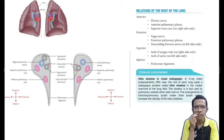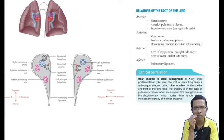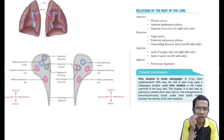The relations of the root of the lung are as follows. Anterior to the root of the lung lies the phrenic nerve, anterior pulmonary plexus, and superior vena cava on the right side. Posterior to the root lies the vagus nerve, posterior pulmonary plexus, and descending thoracic aorta on the left side. Superior to it is the arch of the azygous vein and arch of aorta, and inferior to the root of the lung is the pulmonary ligament. In chest X-ray PA view, the root of each lung casts a radio-opaque shadow called the hilar shadow in the medial one-third of the lung field, cast by pulmonary vessels seen end-on. Enlargement of bronchopulmonary lymph nodes increases the density of these shadows.